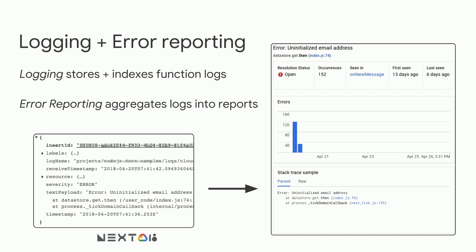Logging and error reporting are pretty straightforward and plug-and-play. Logging stores and indexes logs from your function. Error reporting is also fairly plug-and-play — it's based on logs and aggregates them into meaningful error reports. On the left is a sample log entry showing an error: 'uninitialized email address' in a Cloud Function called onNewMessage. On the right, we have stats about how frequently this error occurred: first seen 13 days ago, last seen six days ago, occurred 152 times, with a sample stack trace and histogram. This is a useful command center for triaging errors.